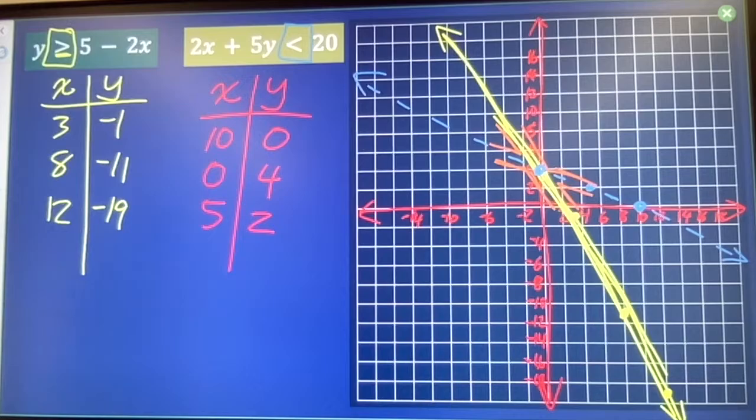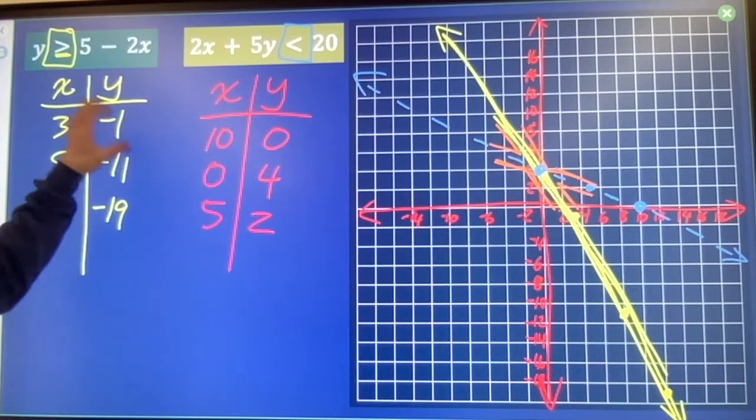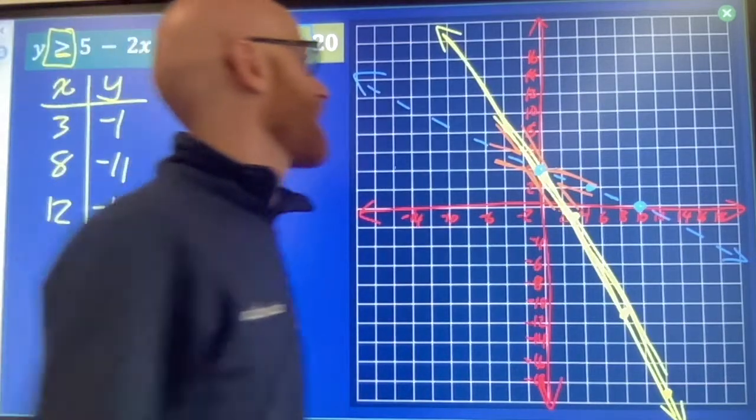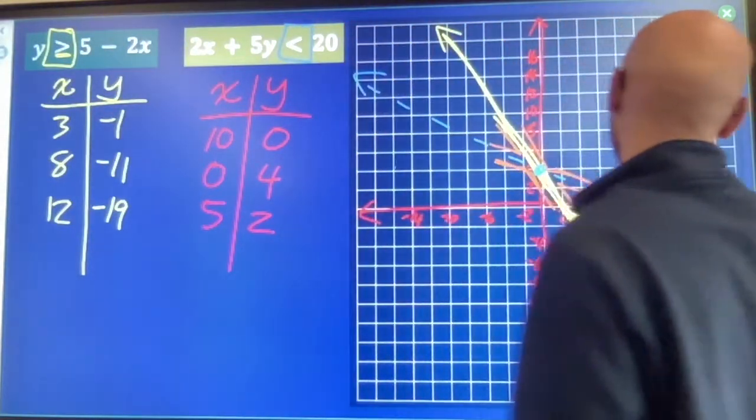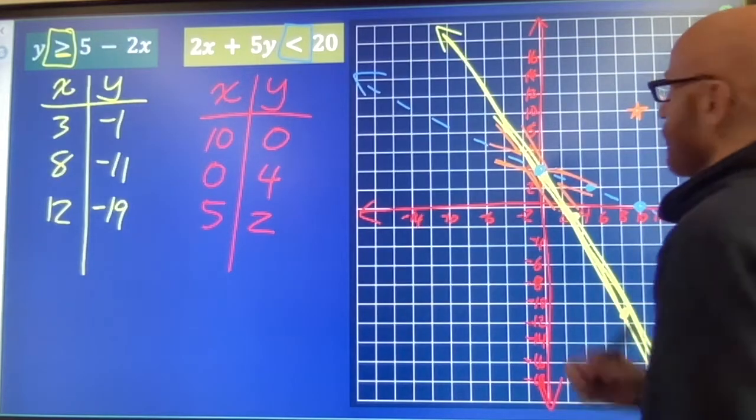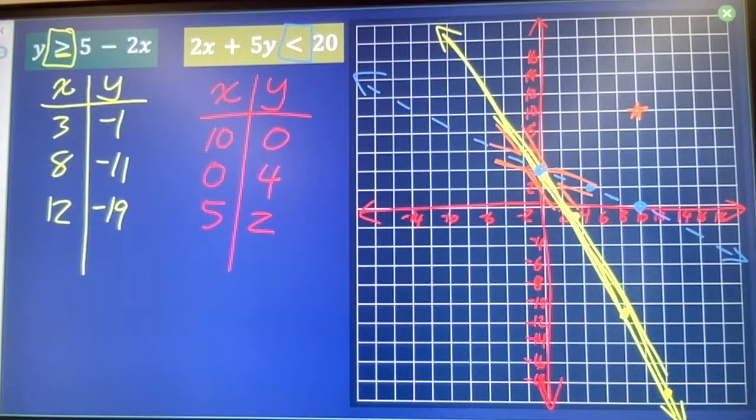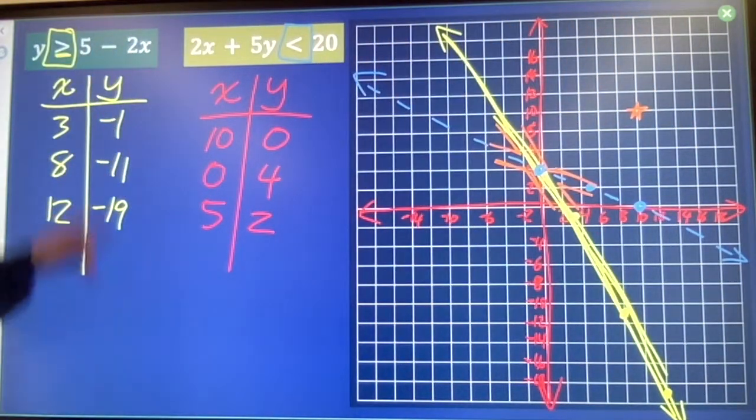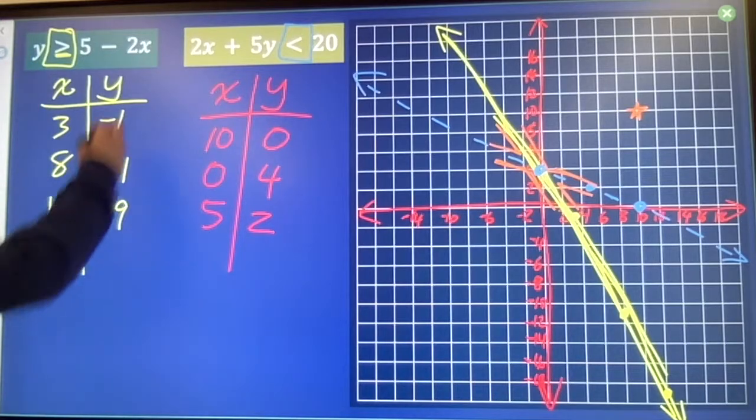I'm going to shade the region that makes both situations true. So, the way that I find that region is I test a point. Let's say this point here, 10, 10. I'm going to see, does that make my first equation true? 5 minus 20 is less than 10. True.